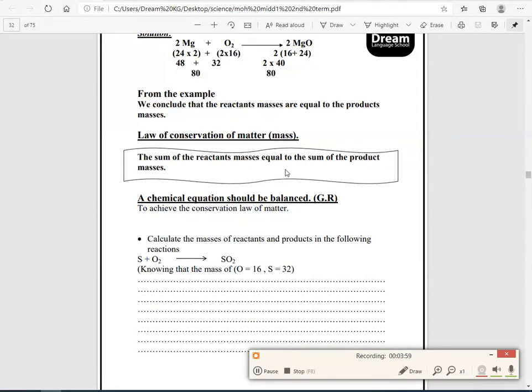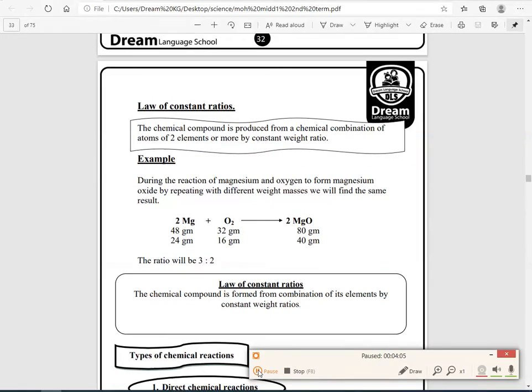So, you have to note that the chemical equation must be balanced, why? To achieve the law of conservation of matter. Now, we will talk about the law of constant ratios. You have to note that the chemical compound is produced from combination of atoms of two elements or more by constant weight ratio.